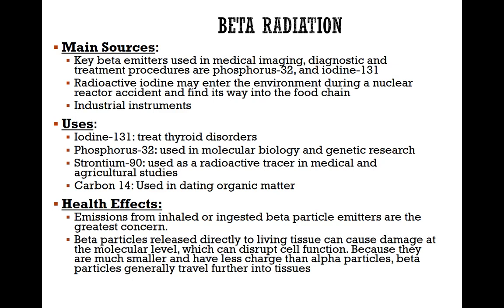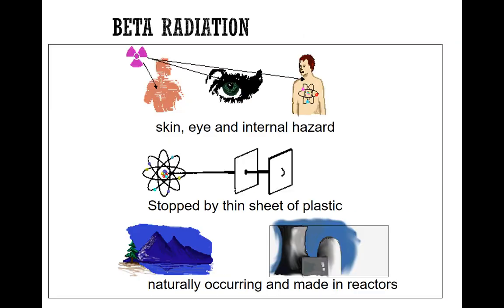Health effects of beta particles — both inhalation and ingestion are of great concern. From an outside perspective, if beta particles are deposited on your skin tissue, they can cause skin burns. Both external and internal problems are a concern. Beta particles can cause skin, eye, and internal hazards. They are stopped by a thin sheet of plastic and occur naturally but also in man-made reactors.